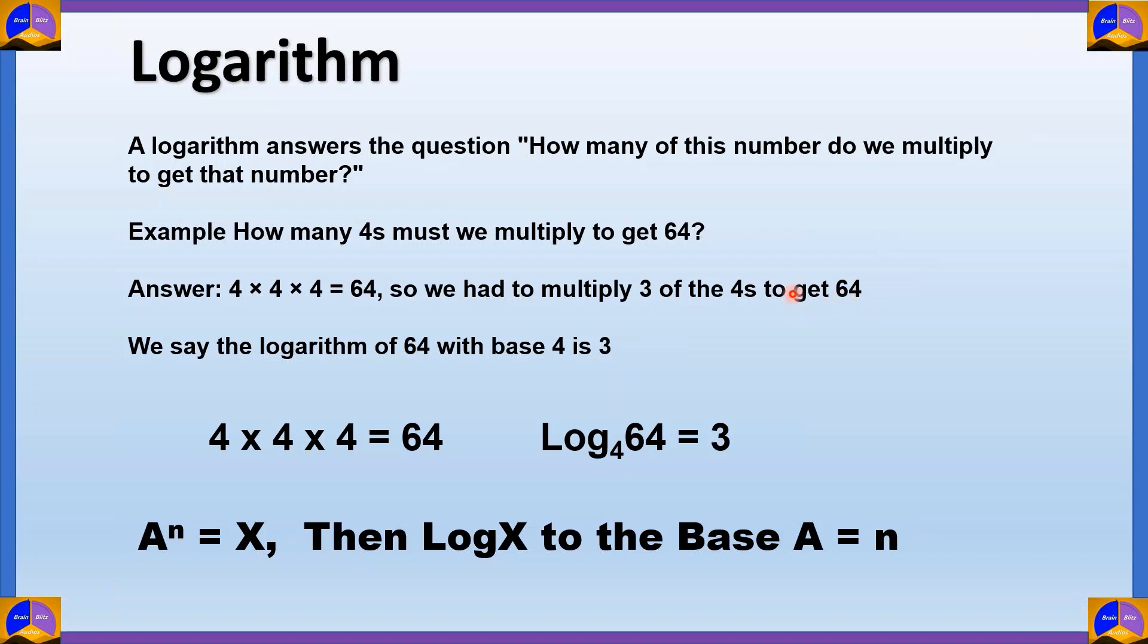And if this is true, then we can say that the logarithm of 64 with base four is equal to three. So if four into four into four is equal to 64, that can be written as four cube equals 64. Then we can also write log 64 to the base four is equal to three. People who studied logarithms, remember this definition: if A raised to n is equal to X, then log X to the base A is equal to n.